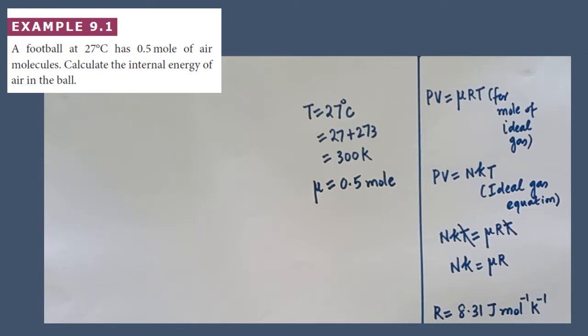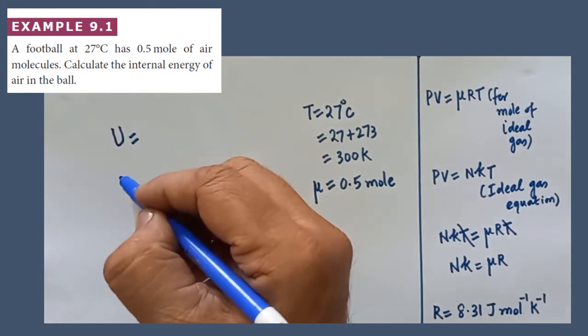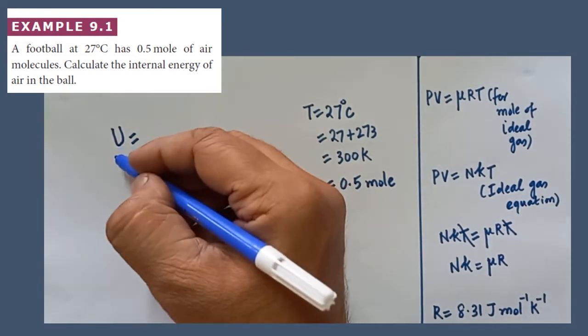Though if you search throughout the textbook, you cannot find any problem related to internal energy. You are asked to calculate the internal energy of the air. U must be calculated. So what is the general formula to calculate the internal energy of ideal gas?